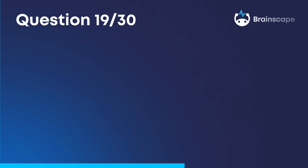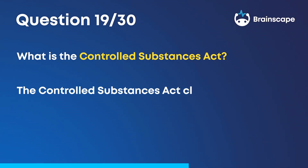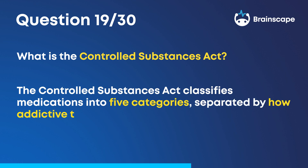Question 19. What is the Controlled Substances Act? The Controlled Substances Act classifies medications into five categories, separated by how addictive the controlled substance is.